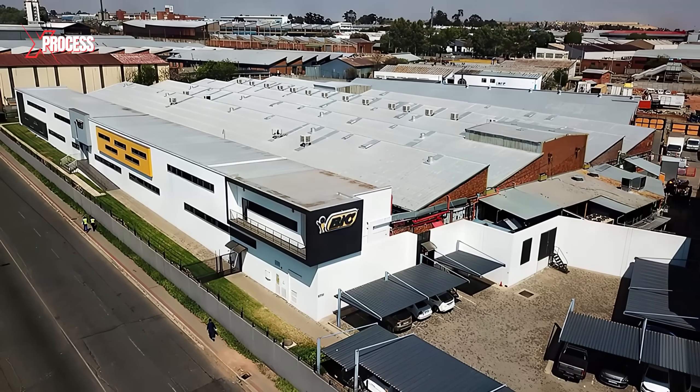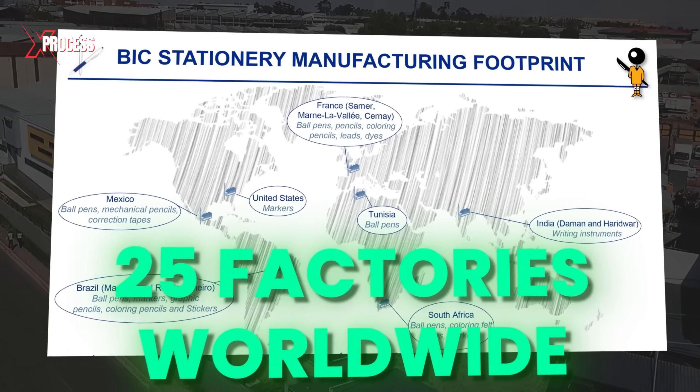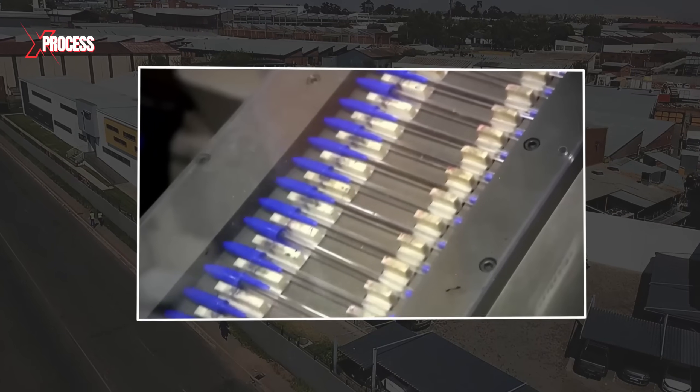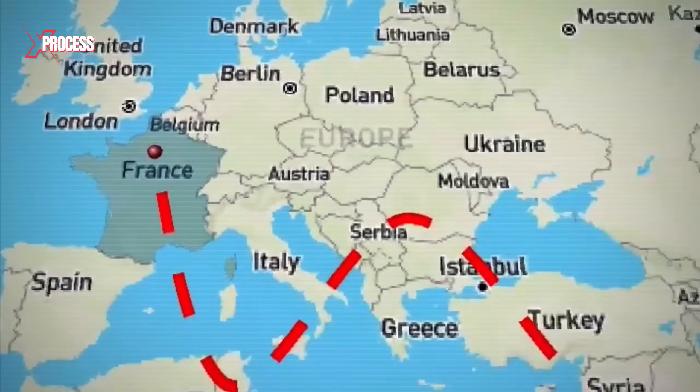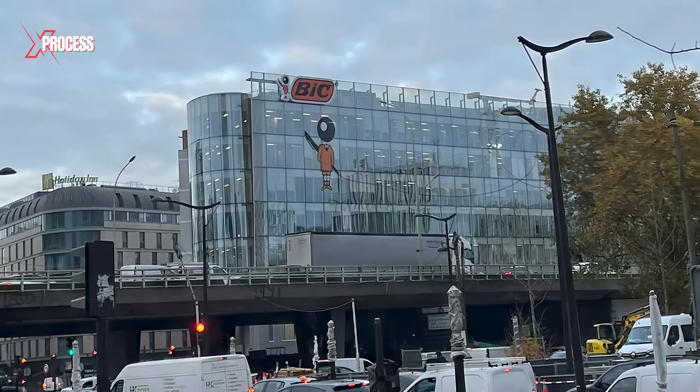So much so that today, the company has approximately 25 factories worldwide, where billions of pens are produced each year. To visit the BIC pen factory, we have to travel to Paris, the capital of France, where the main headquarters of BIC is located.